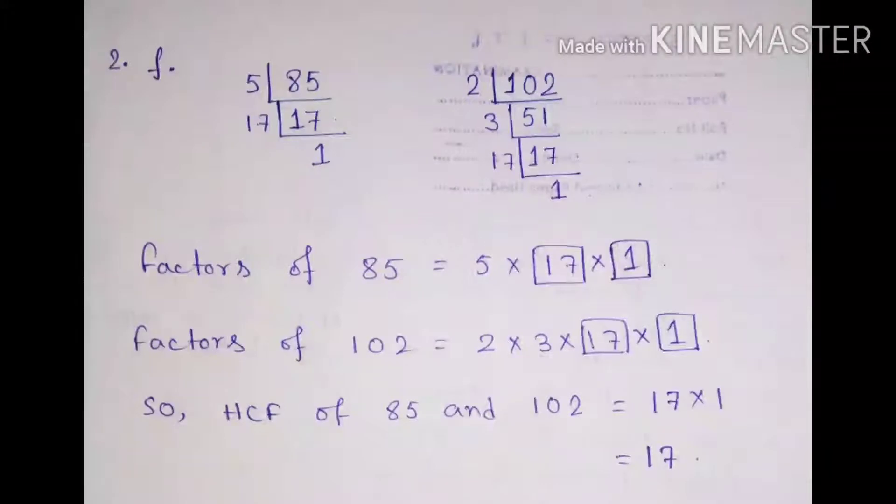And on the other side we have done repeated division of 102. This is quite easy. And after both divisions we got the factors of 85 and 102. And we have listed out all the factors.